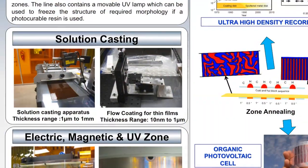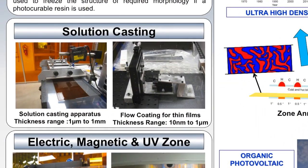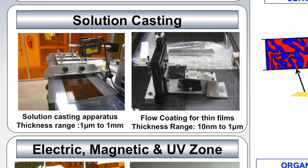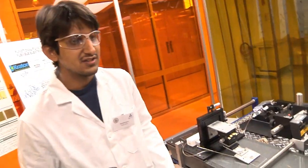We use field-assisted alignment with nanoparticles ranging from 10 nanometers to 100 nanometers. We use electric field, magnetic field, and zone annealing to orient the particles inside flexible film, and it's a continuous process.